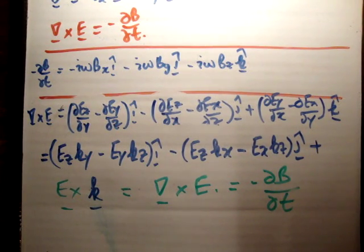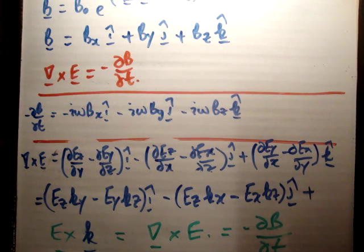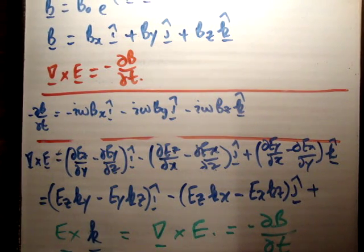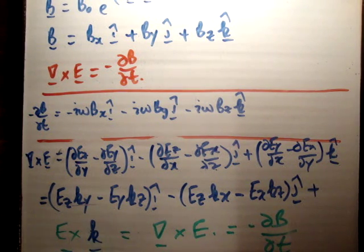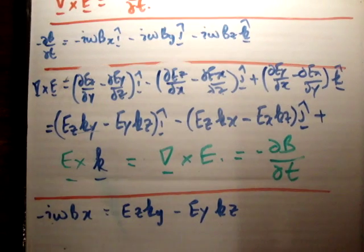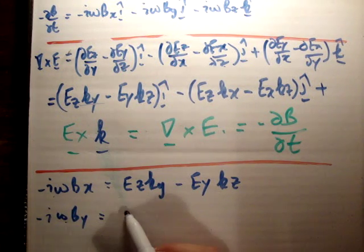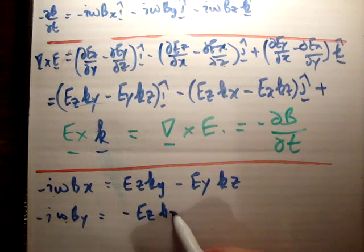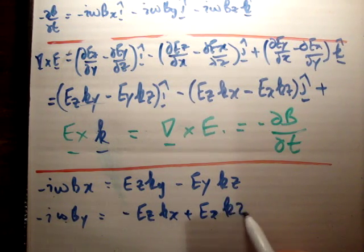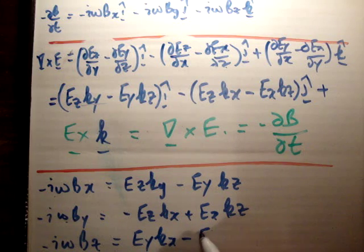We can write the component equations explicitly. We have: negative iω·B_x = E_z·k_y − E_y·k_z; negative iω·B_y = −E_z·k_x + E_x·k_z; and negative iω·B_z = E_y·k_x − E_x·k_y.